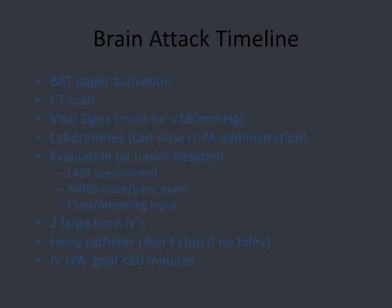All this happens while the junior resident evaluates the patient, including a brief history and an NIH stroke scale score. The goals are: first, do I really think this person is having an ischemic event? And second, are they a candidate for tPA? To receive tPA it's ideal to have two large-bore IVs and a Foley, though we do not let Foley placement hold up administration.